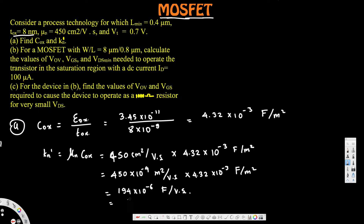Since 10⁻⁶ is micro, the transconductance parameter k_n prime = 194 μA/V². That completes part (a).